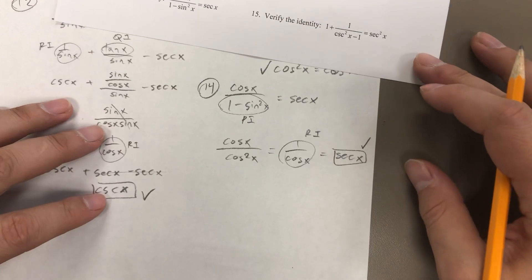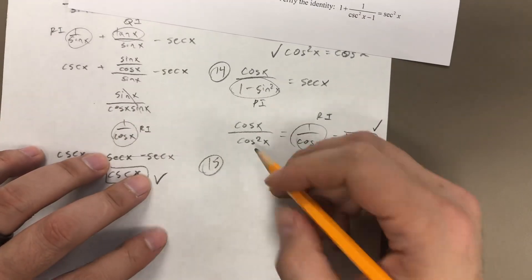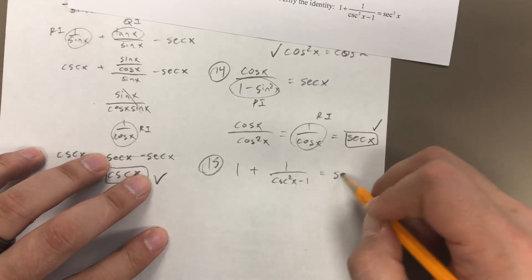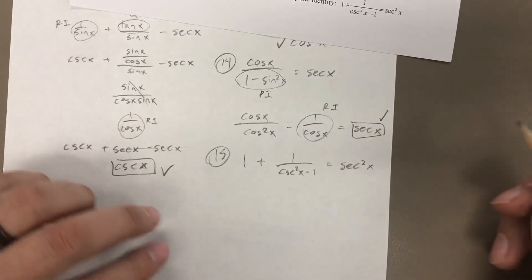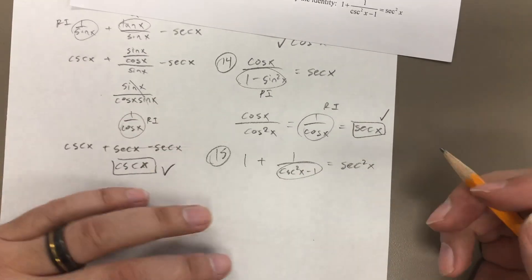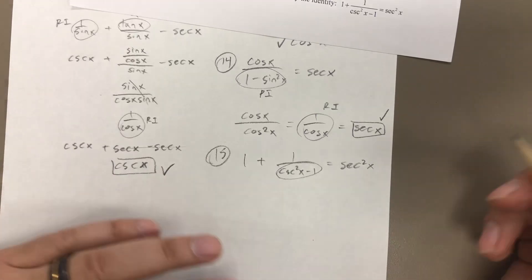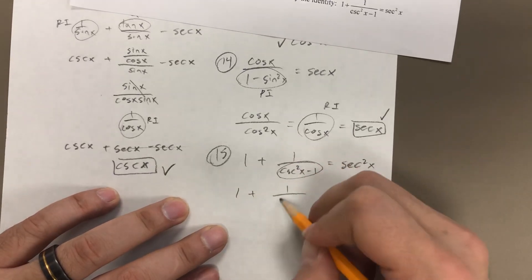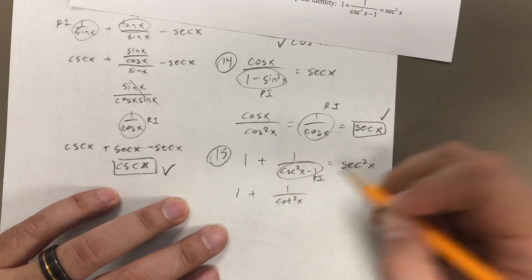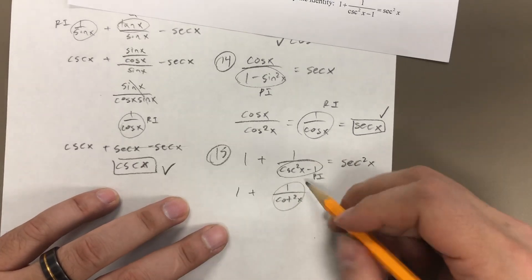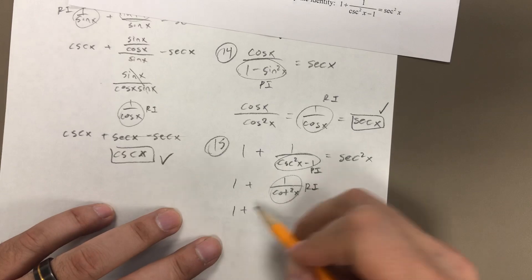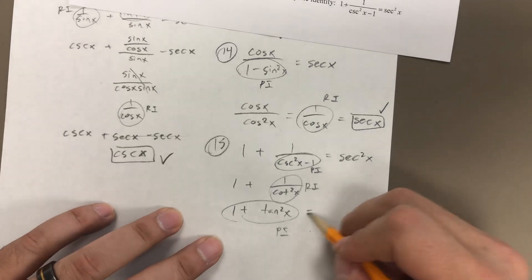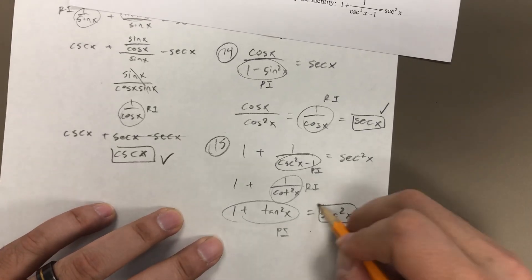Let's get number 15 on there too: 1 plus 1 over cosecant squared of x minus 1, and we need to show that equals secant squared. 1 over cosecant squared minus 1 — you should see that on your identity sheet — that's a Pythagorean identity that turns into cotangent. So we have 1 plus 1 over cotangent squared of x. Then 1 over cotangent is a reciprocal identity that turns into tangent. So this becomes 1 plus tangent squared of x, which is another Pythagorean identity — and that turns into secant squared of x.